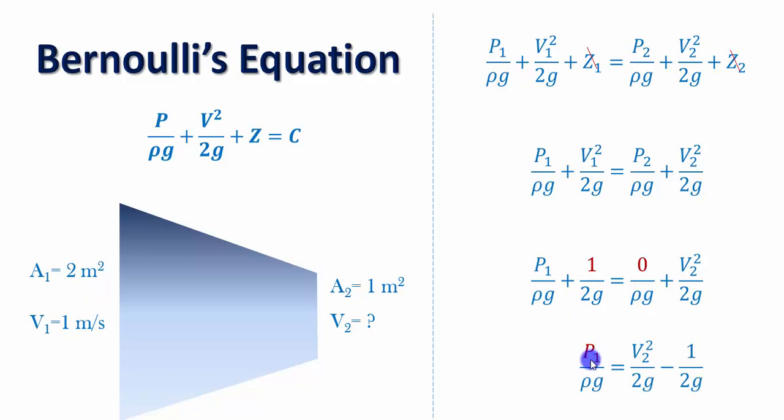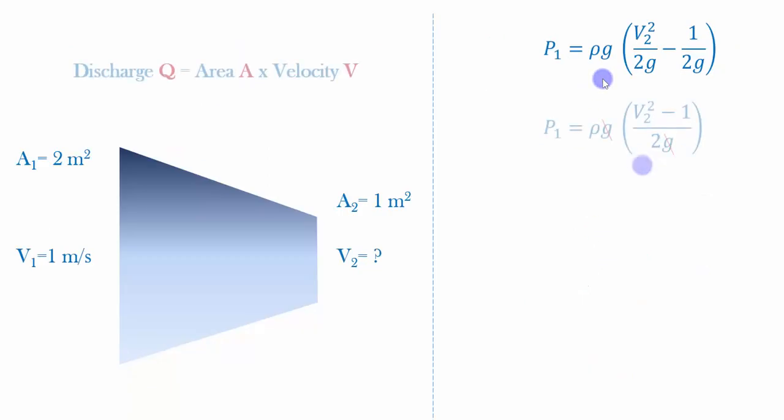We need to have an equation for p1. So I am bringing this ρg term to the right hand side. It will be like this now. Then now we need the value of v2, that is velocity at the outlet, to calculate the pressure at the inlet. We do not know the velocity here.